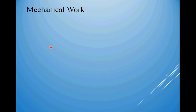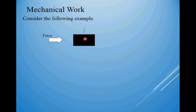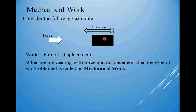The first one: mechanical work. Consider the following example to have a better understanding. Suppose we have a body which is at rest; now we are applying force to it. On application of this force the body will start moving from this initial position to a final position, and there is a distance travelled by this body. So as per definition of work, W is equal to force into displacement. When we are dealing with force and displacement then the type of work obtained is called as mechanical work.